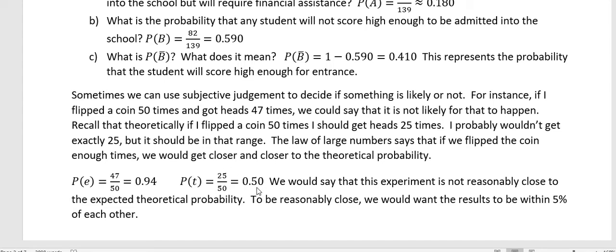Subjectively, I would say that does not seem reasonable. Maybe I have a weighted coin, or maybe I just got super lucky or unlucky. But we would say this experiment is not reasonably close to the expected theoretical probability. To be reasonably close, we would want the results to be within 5% of each other.